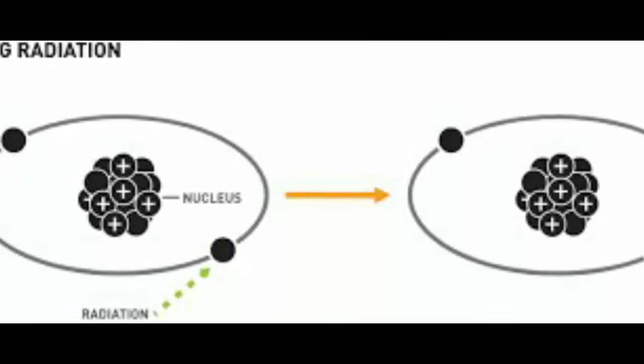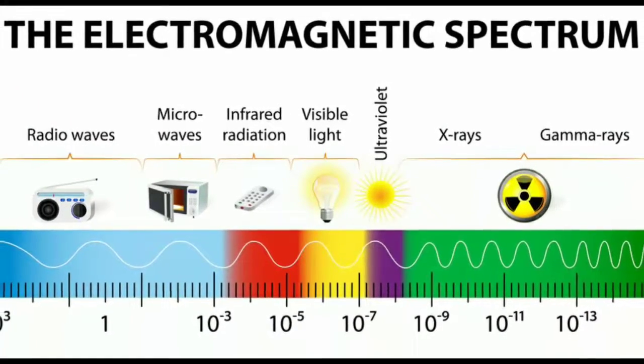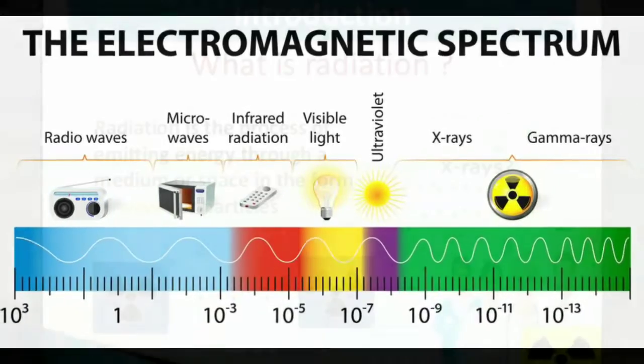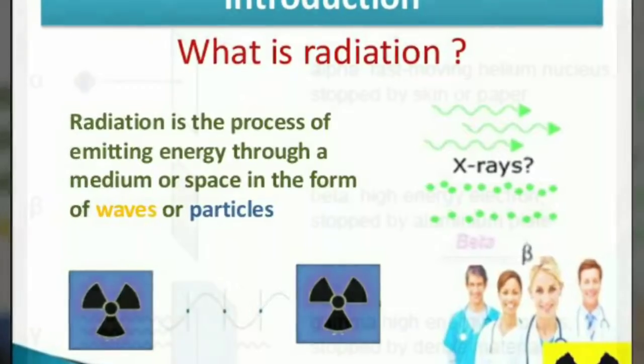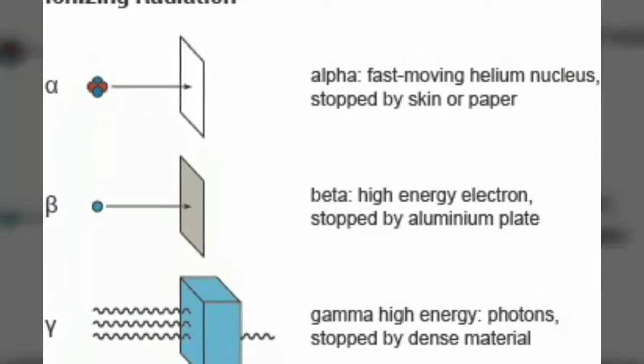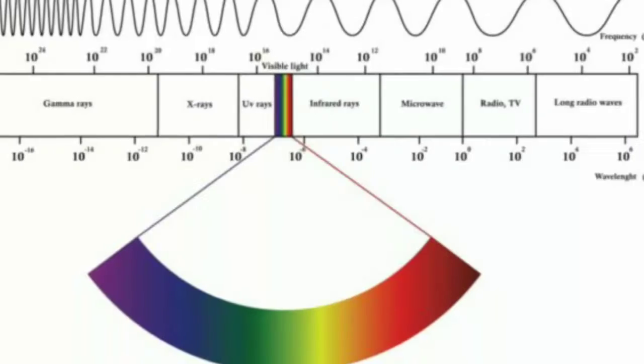and as its energy is conserved in vacuum, the intensity of all types of radiation from a point source follows an inverse square law in relation to the distance from its source. Like any ideal law, the inverse square law approximates a measured radiation intensity to the extent that the source approximates a geometric point.